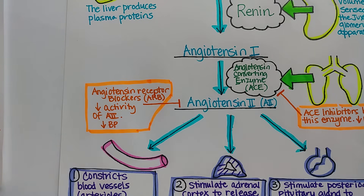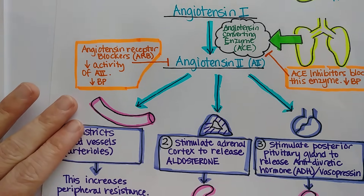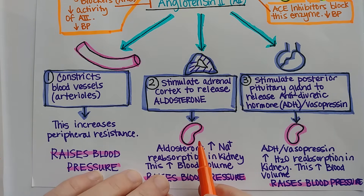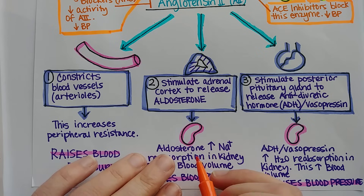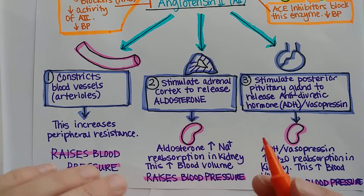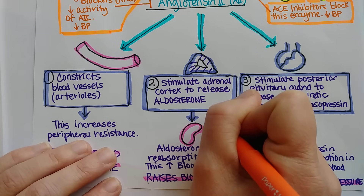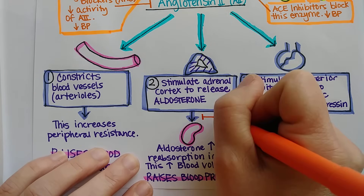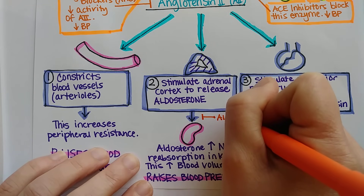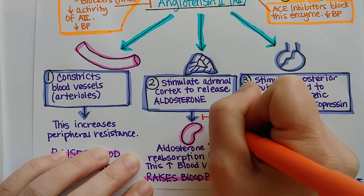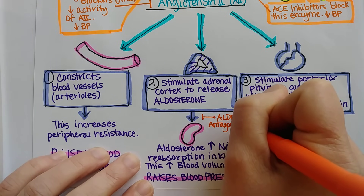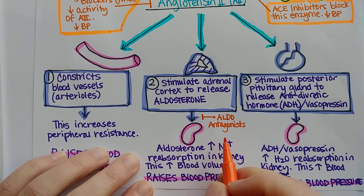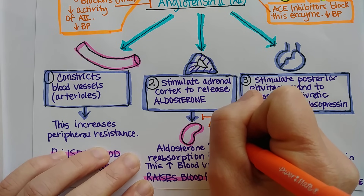You can also take medications that directly inhibit the binding of aldosterone to its receptors in the kidney — these are called aldosterone antagonists. These are drugs that antagonize the binding of aldosterone to the kidney, meaning they block it, and these will lower blood pressure.